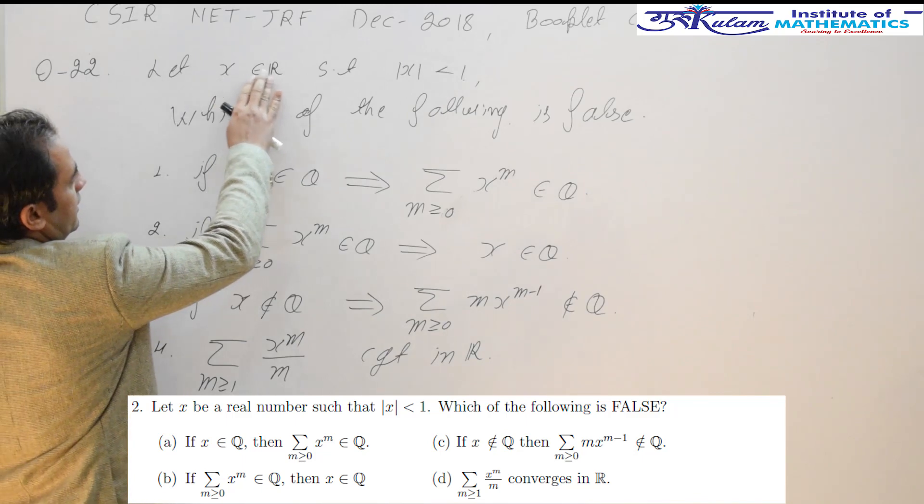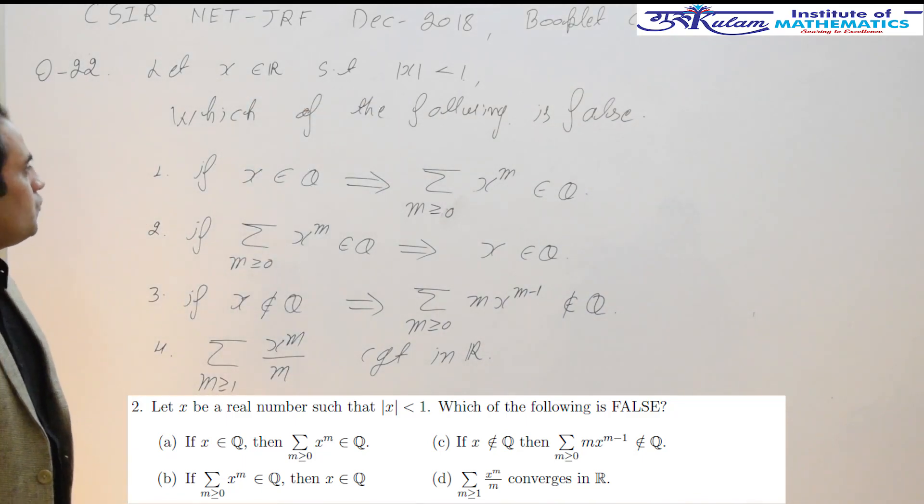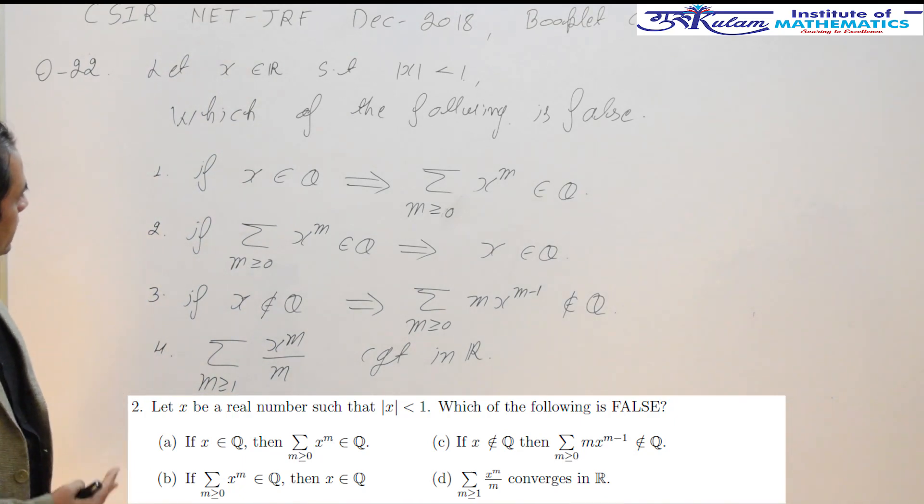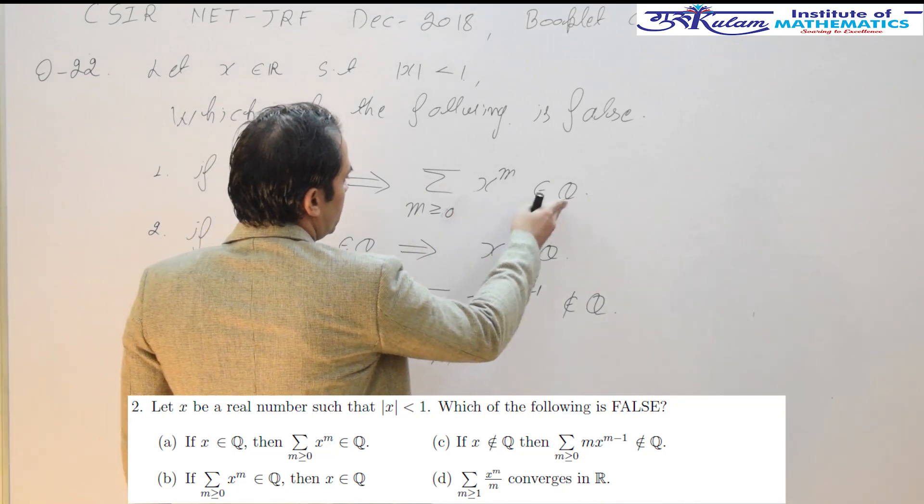Let x be any real number such that mod of x is less than 1. We have to choose the false statement. First statement is: if x is a rational number, then the sum of this series should be a rational number.